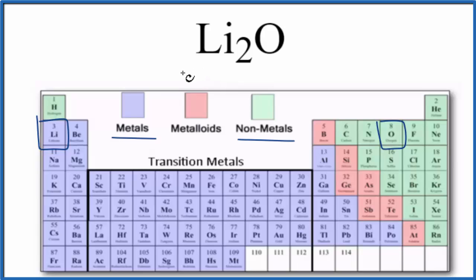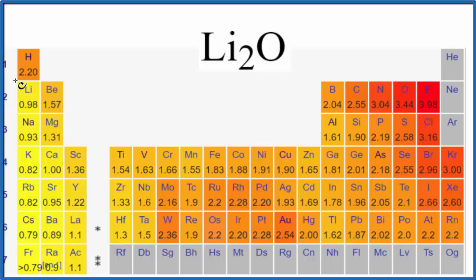But we should take a look at the electronegativity difference between the lithium atoms and the oxygen. Lithium is 0.98 and oxygen is 3.44. If we have a difference of 2.0 or greater, we have an ionic compound. The difference between 0.98 and 3.44 is greater than 2.